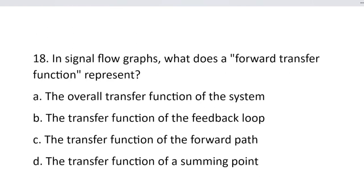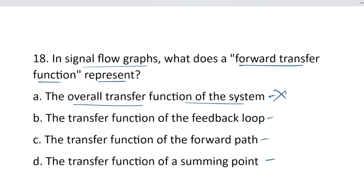Question number 18. In a signal flow graph, what does a forward transfer function represent? Option A, the overall transfer function of the system. Option B, the transfer function of the feedback loop. Option C, the transfer function of the forward path. Option D, the transfer function of a summing point. The correct answer is option C — the transfer function of the forward path represents the forward transfer function.